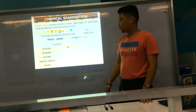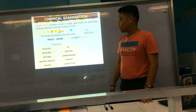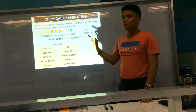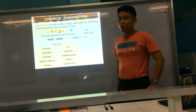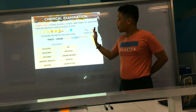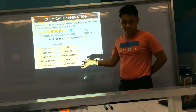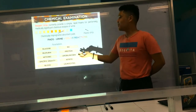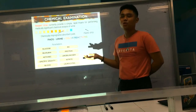Here are the different parameters. We have about 10: glucose, bilirubin, ketones, specific gravity, blood, pH, protein, urobilinogen, nitrite, and leukocytes or leukocyte esterase. We will go through each parameter one by one individually.